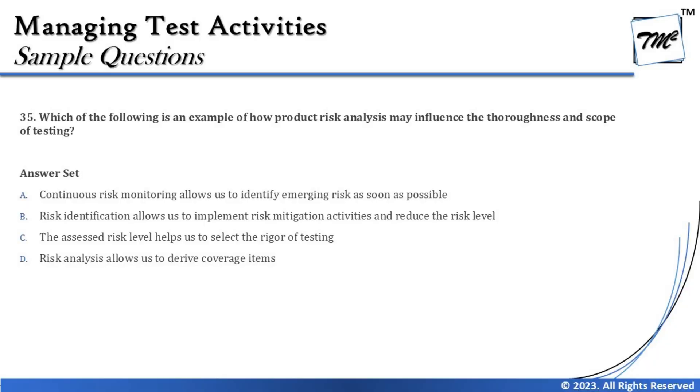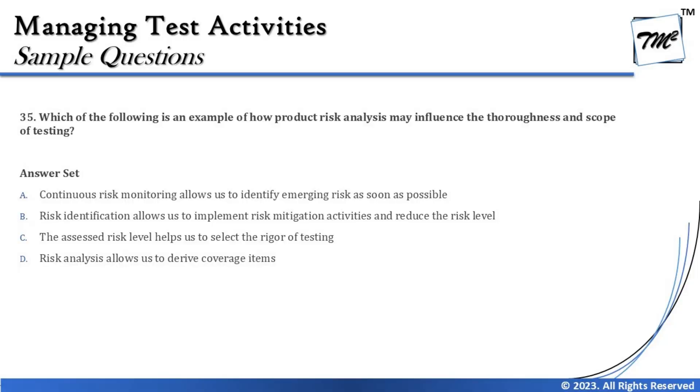Option A says continuous risk monitoring allows us to identify emerging risks as soon as possible. That's a great thing, but monitoring is part of risk control, not part of the initial product risk analysis. Risk analysis covers identification and assessment, while risk control covers mitigation and monitoring. So option A is not correct — it's a very attractive distractor. Option B says risk identification allows us to implement risk mitigation activities and reduce the risk level. Risk identification alone cannot determine that.